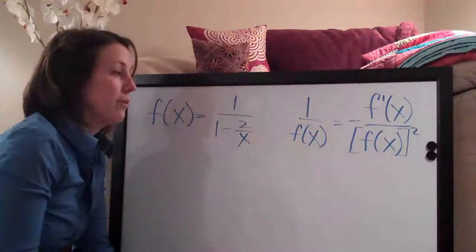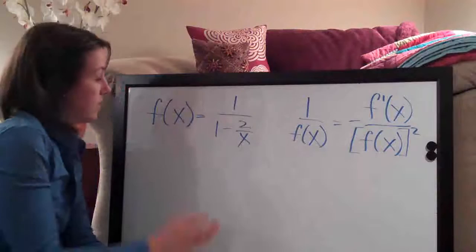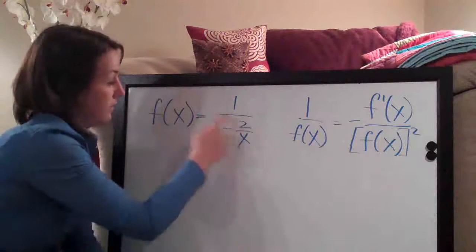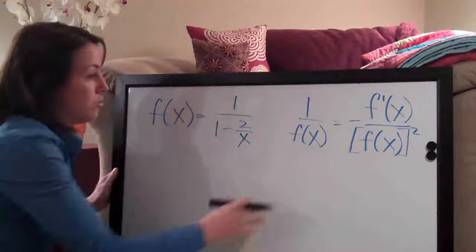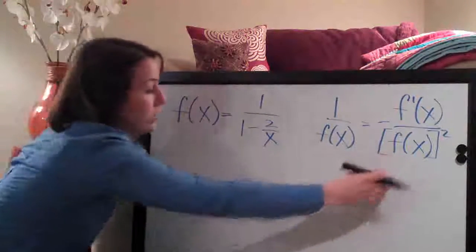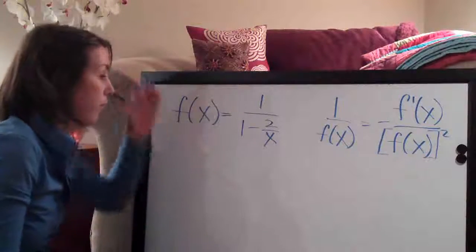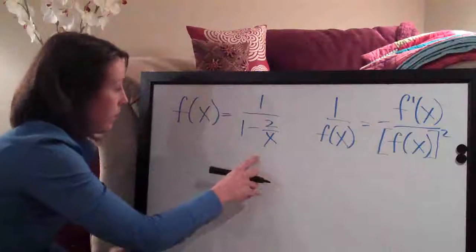So it's kind of a shortcut way. If you run across something, you're asked to take the derivative of a function like this, you see 1 on the top and a function here on the bottom. It's a shorthand way to be able to take the derivative using this rule instead of conventionally. So we're going to go ahead and apply this rule to this function.